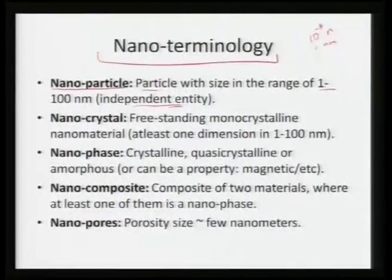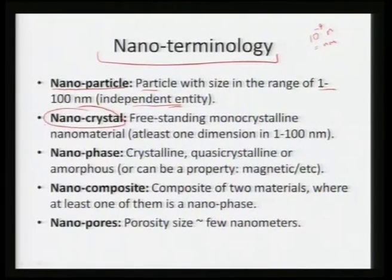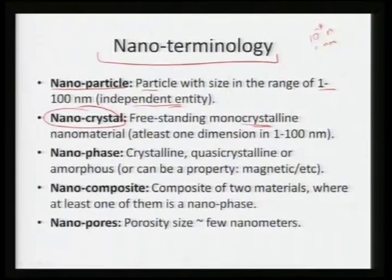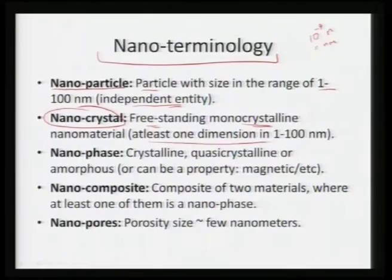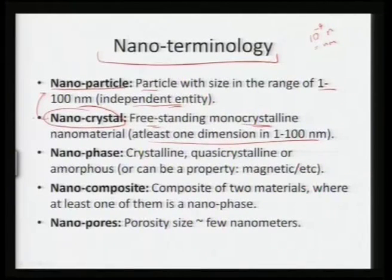A nanoparticle has a size in the range of 1 to 100 nanometers. A nanocrystal is a free-standing monocrystalline nanomaterial with at least one dimension in the scale of 1 to 100 nanometers. So a nanocrystal can also be a nanoparticle.